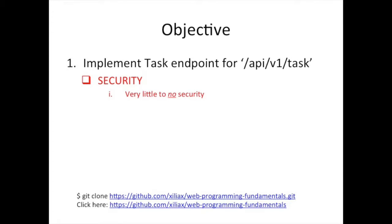Quick reminder before we get started. We're going to be implementing the task endpoint, which is at slash API slash version one slash task. We're basically not going to care about security. In the previous video, I talked about how difficult security is. We're going to do some simple things, but you really shouldn't consider this application secure, because once you know where the endpoint is, you can actually create a user — including an admin user. Our application is going to start out with no users, and we're going to create an admin user using curl from the command line. You can create tasks from the command line, delete tasks — all the things you can do through the UI, you can do from the command line without any authentication.